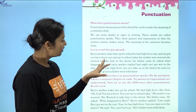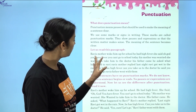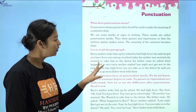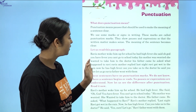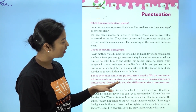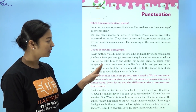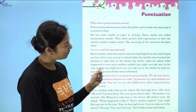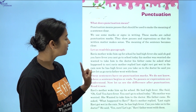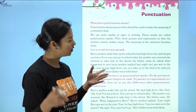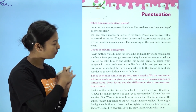Ravi's mother woke him up for school. He had high fever. She said, Oh God, you have fever. You can't go to school. Today his mother was worried. She wanted to take him to the doctor. His father came. He asked what happened to Ravi. Ravi's mother replied, last night Ravi got wet in the rain. Now he has high fever. Can you take us to the doctor? He said, yes, sure. Let us go. Ravi's father went with them.